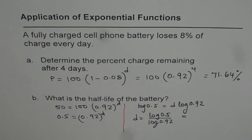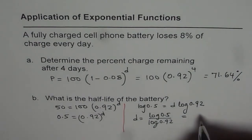Let us calculate. Log of 0.5 divided by log of 0.92 is equal to 8.31.